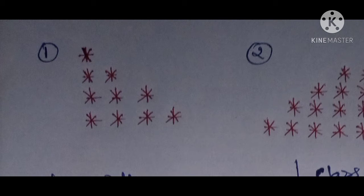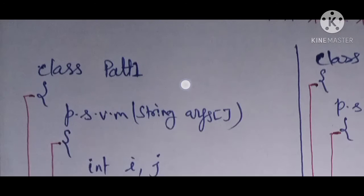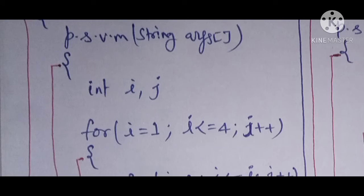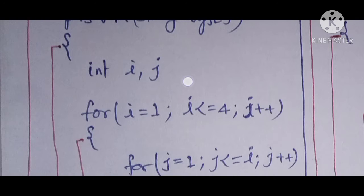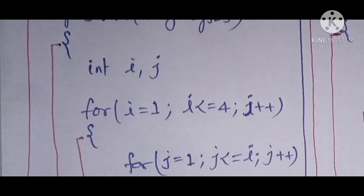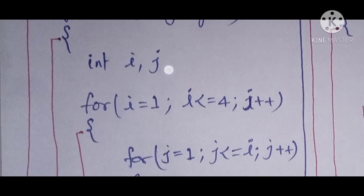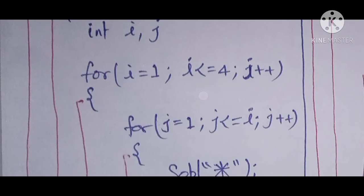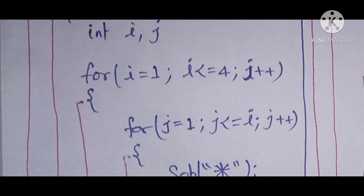We need a nested loop. I have designed the class — class name is `pat1`, with a `psvm` main method. I have taken two variables, `i` and `j`. Note: make sure to terminate `j` with a semicolon — I missed that, so add it in your copy. The outer loop goes from `i = 1` while `i < 4`, `i++` — this controls how many lines are in the pattern, which is 4.